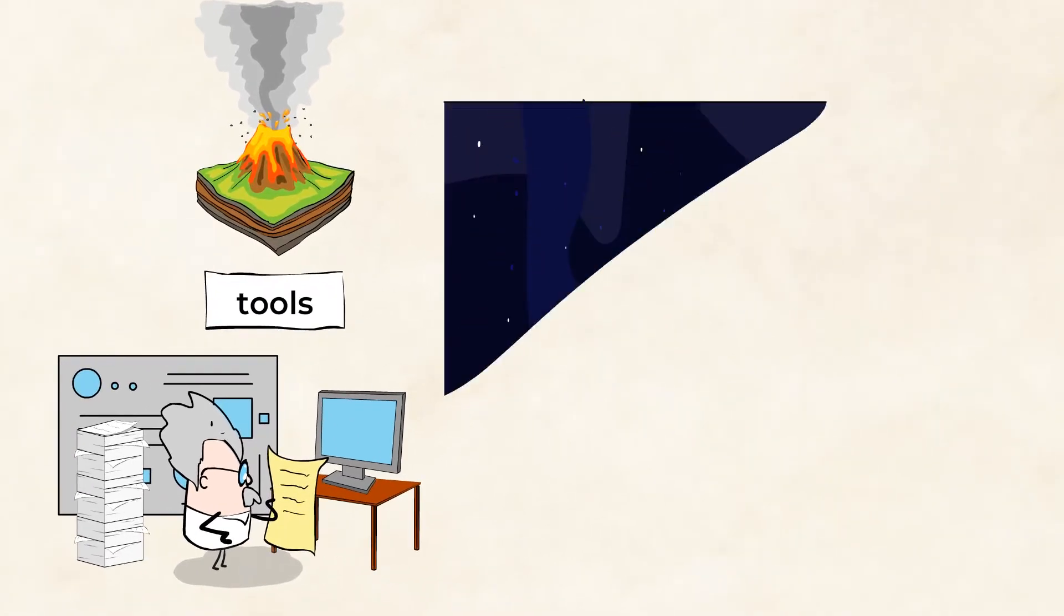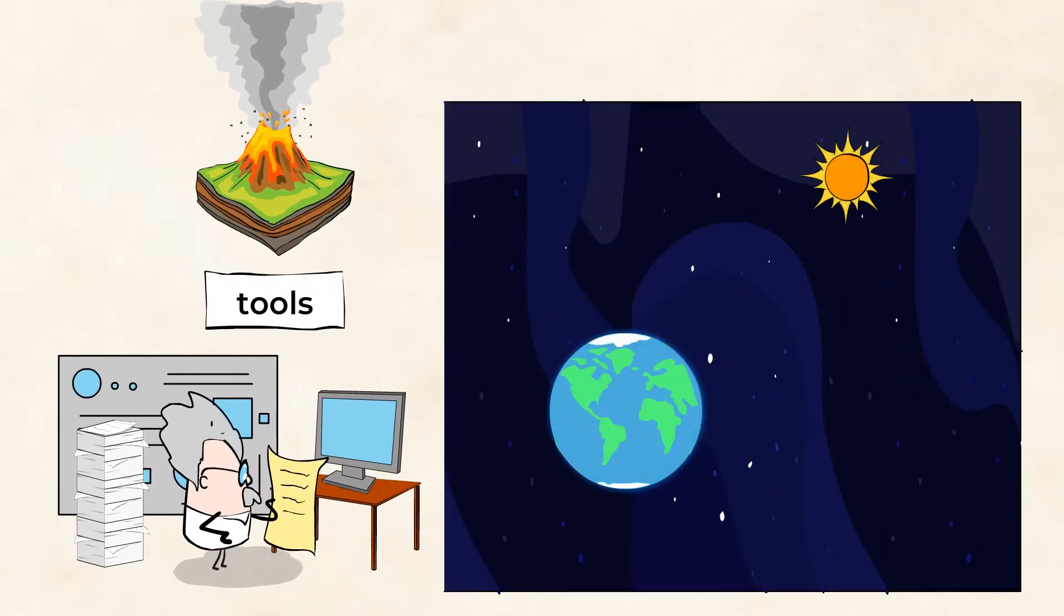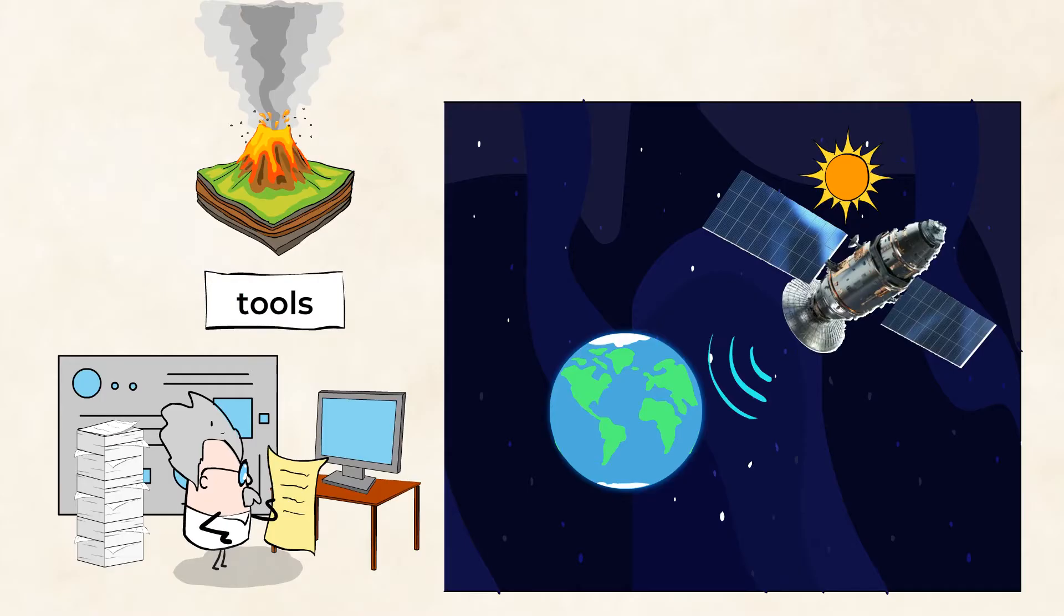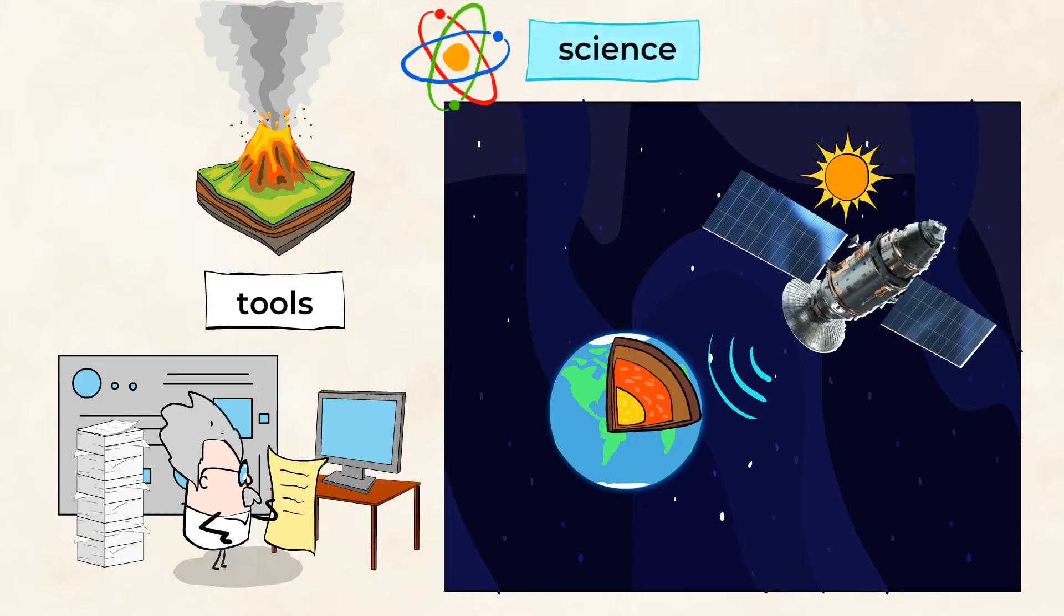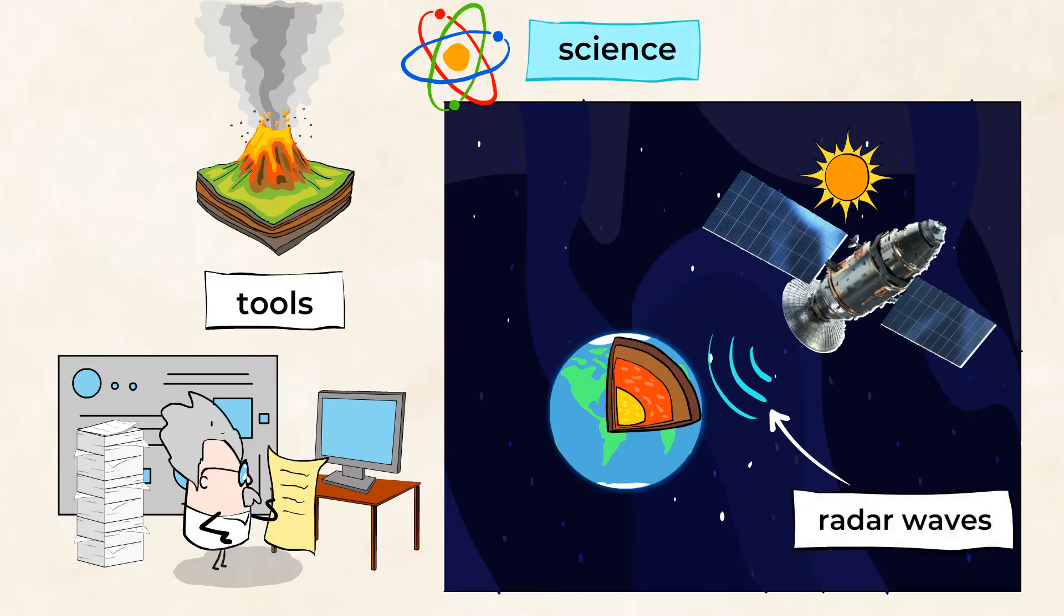Would you believe that one way they observe volcanoes is from space? That's right. We are able to get information about the depths of Earth from far away from Earth. That's the power of science. That's amazing. Satellites up in space use radars to detect changes in the volcano. Let me explain.